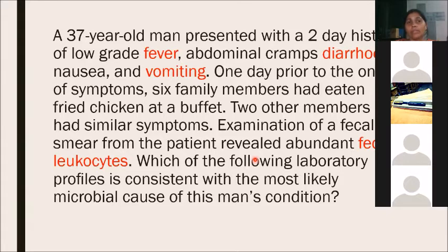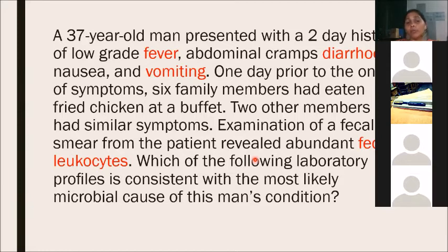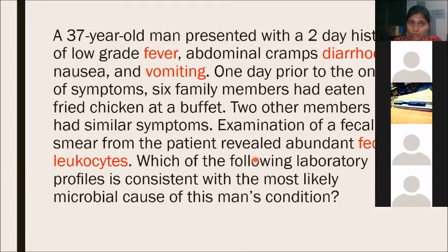A 37-year-old man presented with a 2-day history of low-grade fever, abdominal cramps, diarrhea, nausea, and vomiting. One day prior to onset, six family members had eaten fried chicken at a buffet, and two other members had similar symptoms. Examination of the fecal smear revealed abundant leukocytes. You need to identify the most likely causative organism and then check its lab profile.